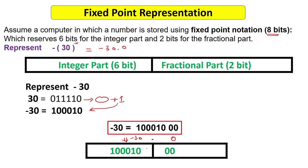To summarize: signed magnitude, one's complement, and two's complement representations for integers are all special cases of fixed point representation. All integer numbers and floating point numbers like 30.0 or 30.98 can be expressed using fixed point representation, where we fix the number of bits, know where the decimal point is, and know how many bits are for integer and fractional parts.